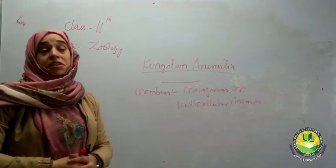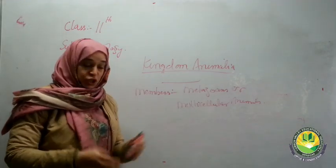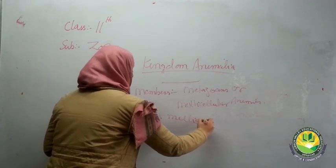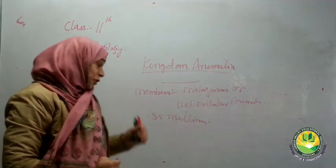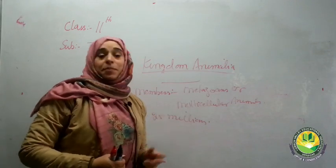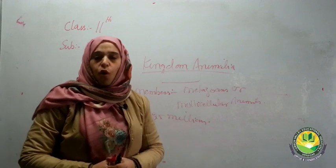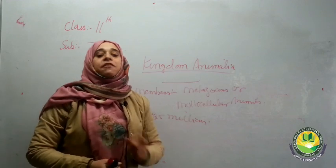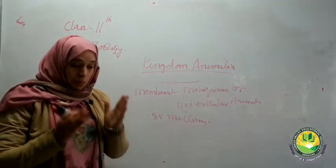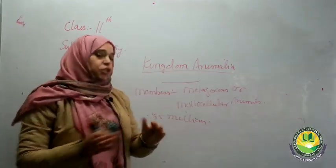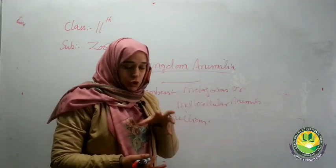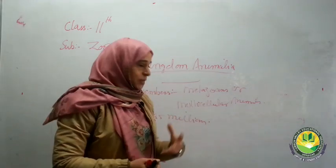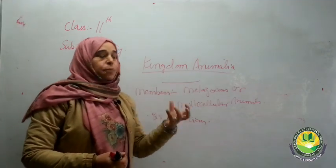Out of the 1.7 to 1.8 million species that have been named and identified, the number of animals is 1.25 million. These 1.25 million members of Kingdom Animalia are diverse in their forms, structures, shapes, and sizes — meaning they differ in their morphology, anatomy, and physiology. Therefore, there should be a certain basis of classification for this kingdom, so that all organisms can be linked to a common ancestor and studied efficiently.